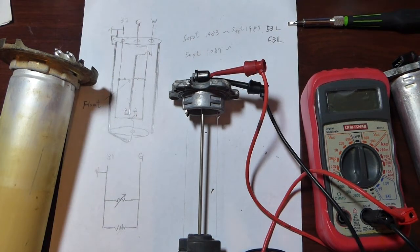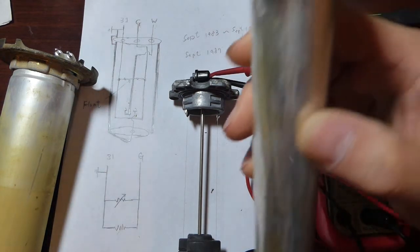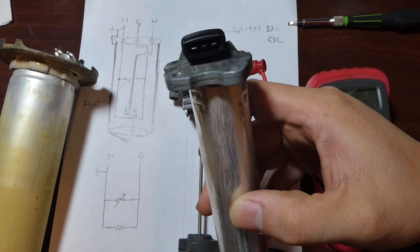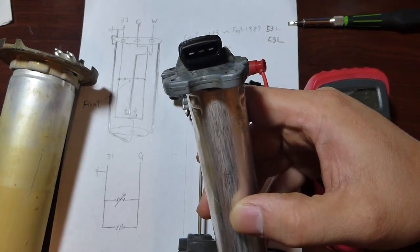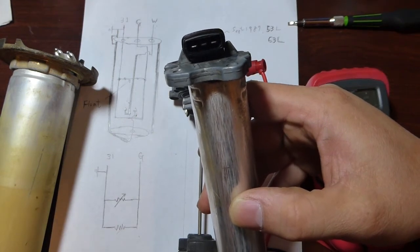Alright, let's move on to the fuel level sending unit itself. It's basically a variable resistor plus a switch. It's a very simple device.